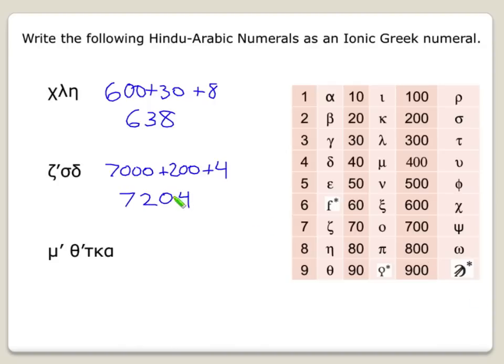And again, in this case, for a ciphered system, you don't have to put a 0 for a specific place value. But in a place value system, you do.